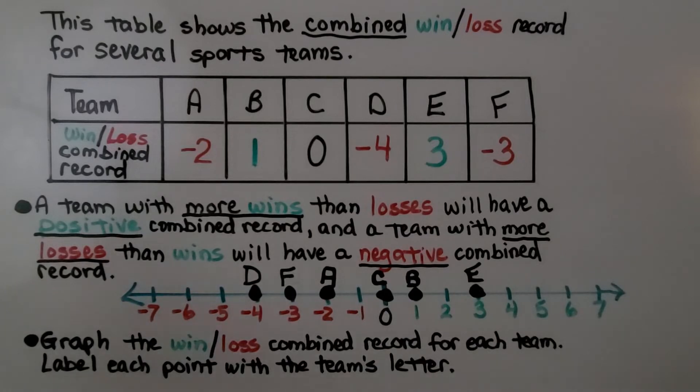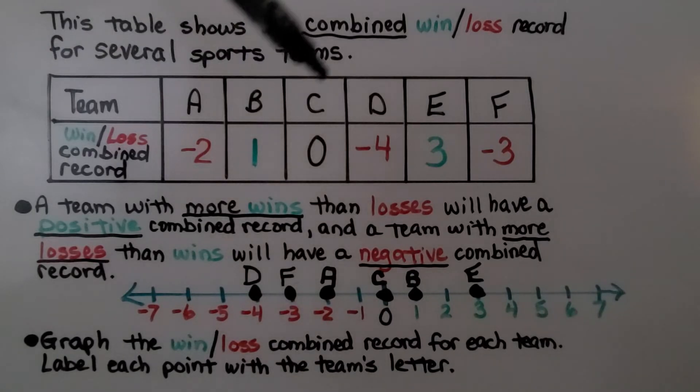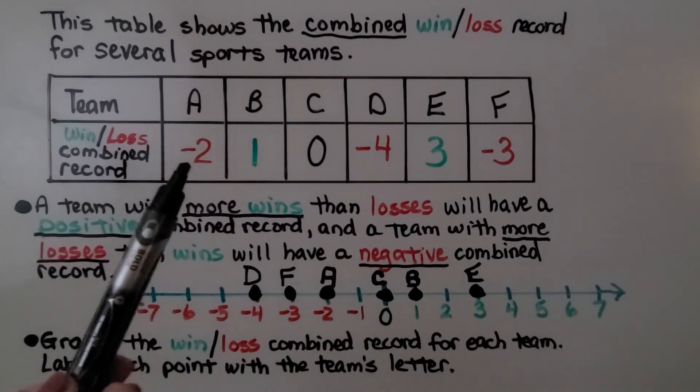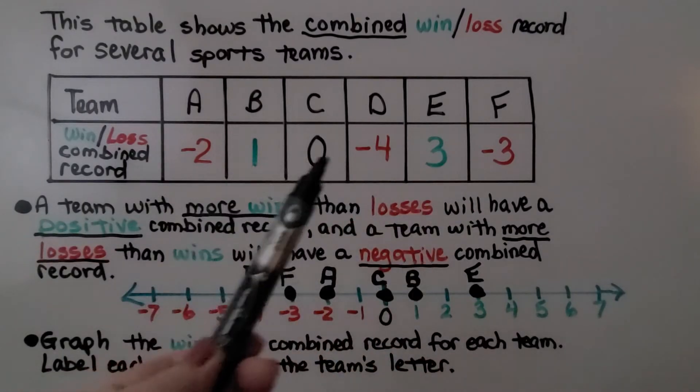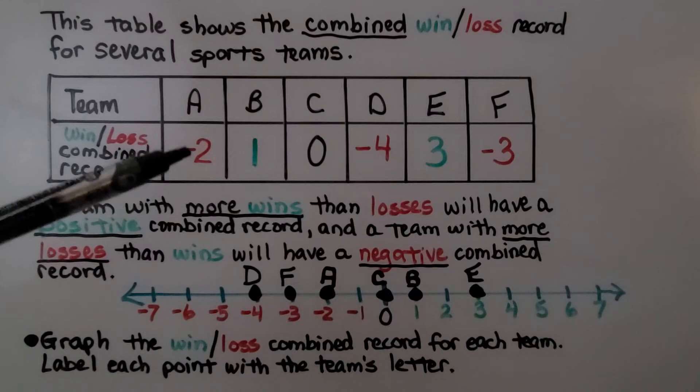This table shows the combined win-loss record for several sports teams. Here we have teams A, B, C, D, E, and F. This is their combined win-loss record. In positive, negative numbers, and zero, a team with more wins than losses will have a positive combined record, and a team with more losses than wins will have a negative combined record.